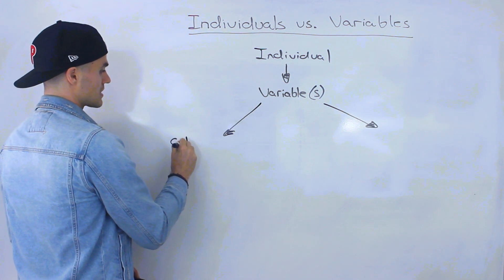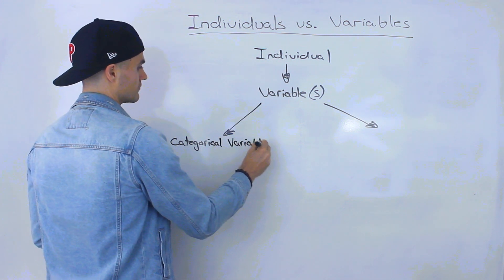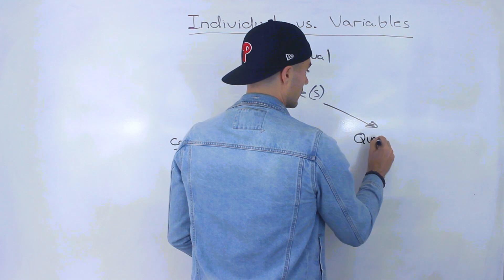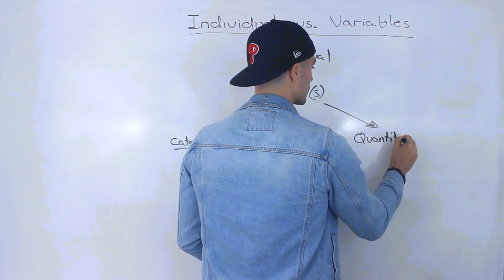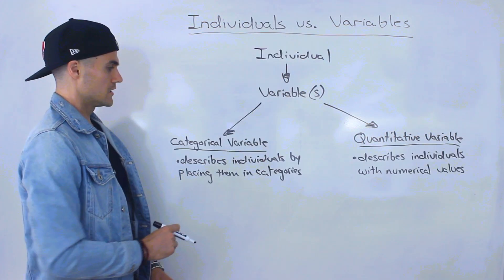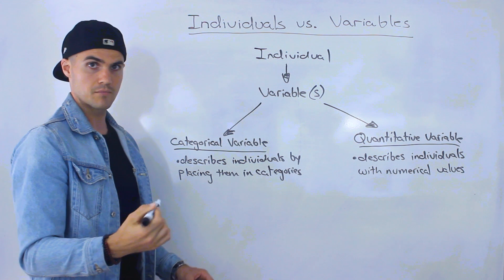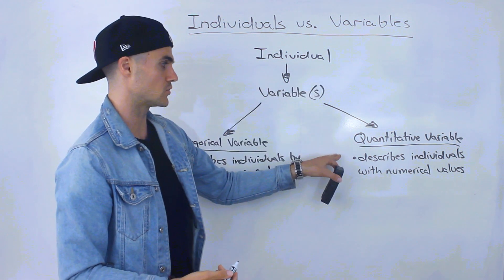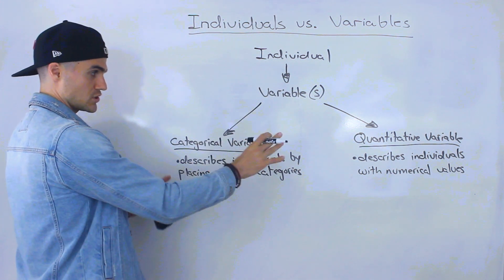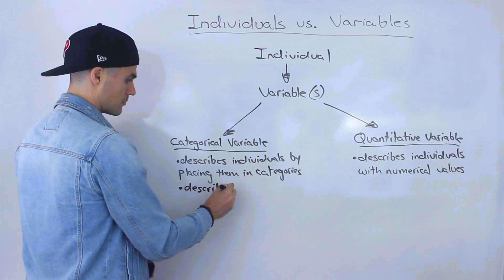And there's two main types of variables that we're going to deal with. The first type of variable is something called a categorical variable. And then the second type of variable is called a quantitative variable. So a categorical variable basically describes these individuals by placing them in categories, while a quantitative variable describes these individuals with numerical values. And so a good way to differentiate both of these is usually categorical variables are described by words.